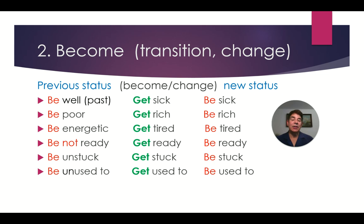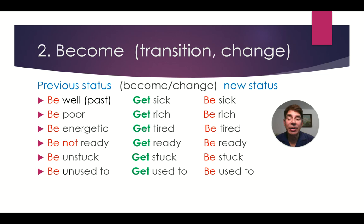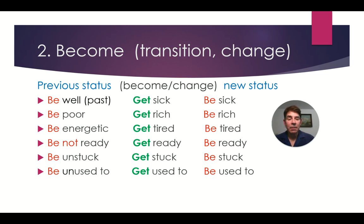With BECOME, and using GET to indicate transition or change, you can look at it like this. You had a previous status. Then the change occurred. You BECAME sick, for example. Then you have a new status. Usually we say this in the past tense: I was well → I got sick → Now I am sick. Another example: Be poor → Get rich → Be rich. Be energetic → Get tired → Be tired. Be not ready → Get ready → Be ready. Be unstuck → Get stuck → Be stuck. Be unused to something → Get used to something → Be used to something. Can you see the pattern here?